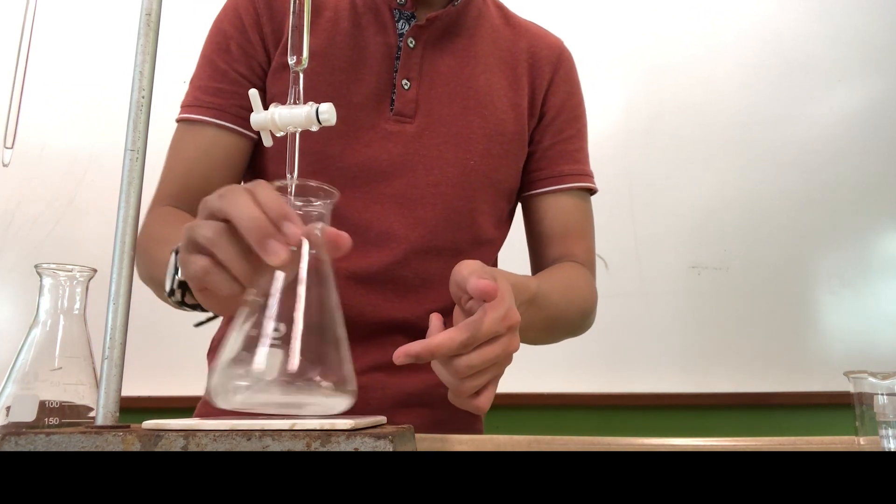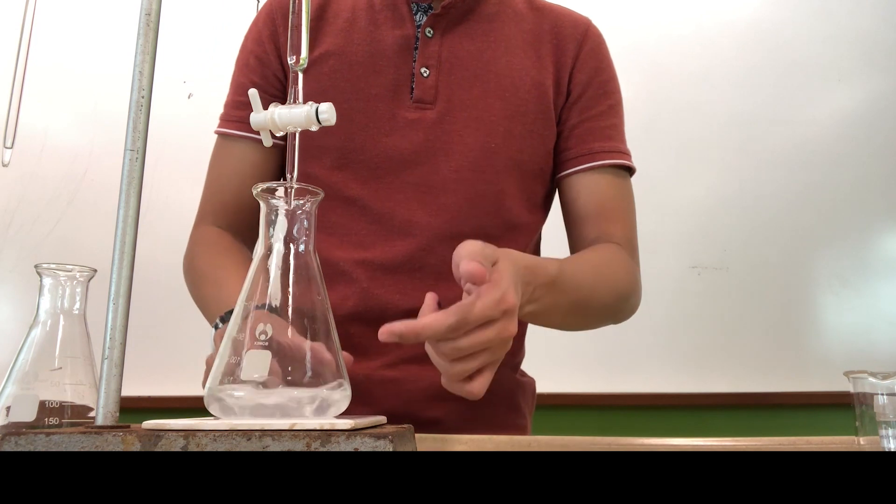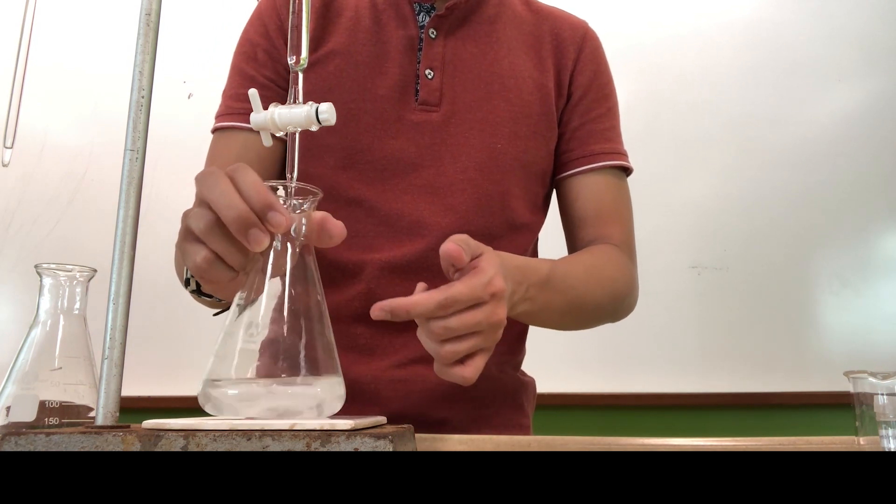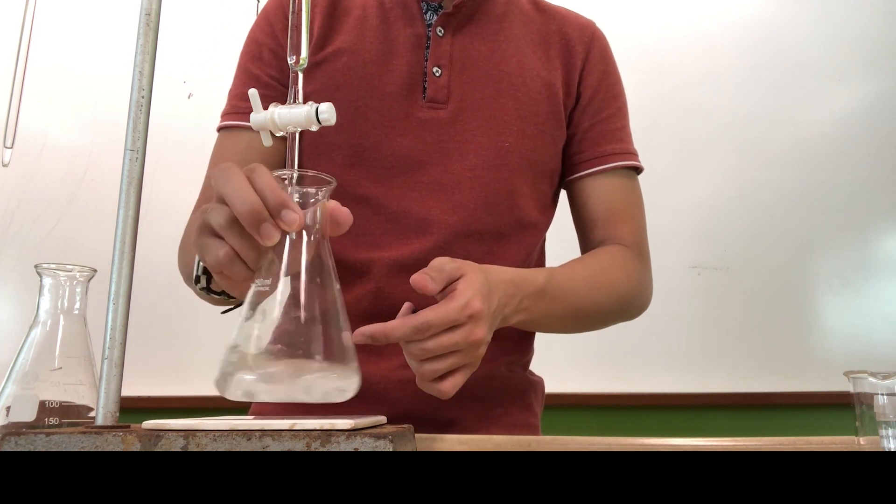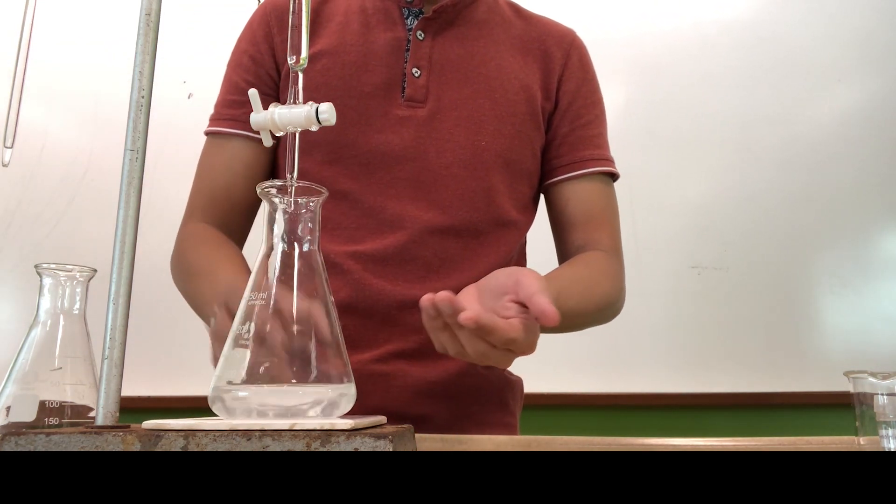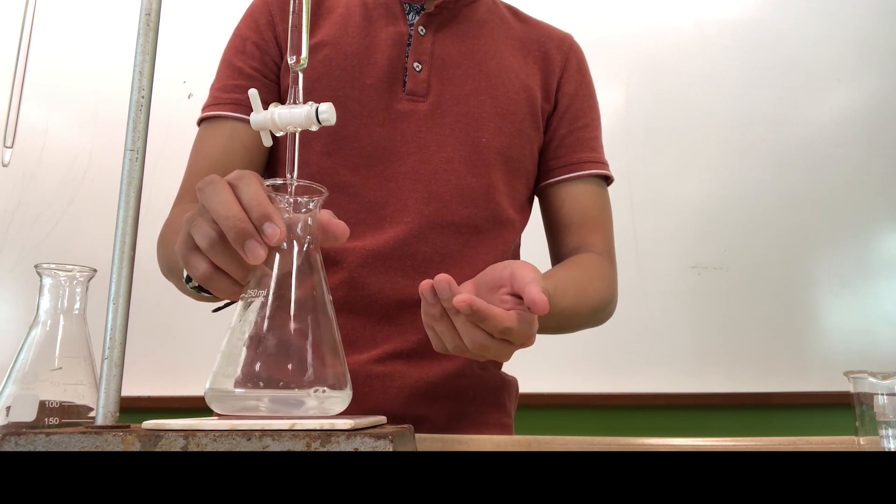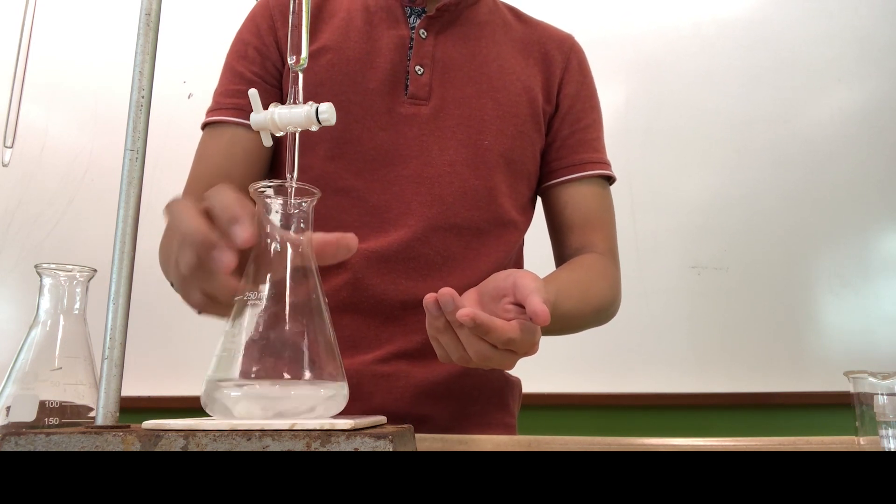As you can see over here, this is what we mean by dropwise, whereby it takes a while for each drop to be formed so that you can swirl, observe, before you let the next drop fall down. Take note of how much should the knob be turned, the angle of it. Then now feel free to add in your solution as per normal.